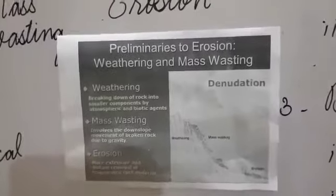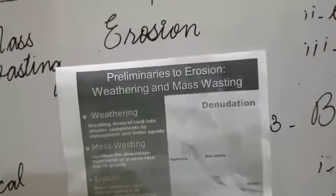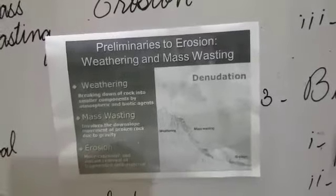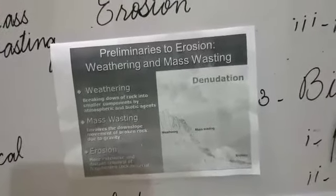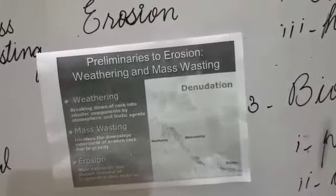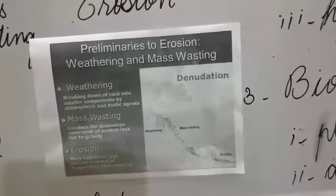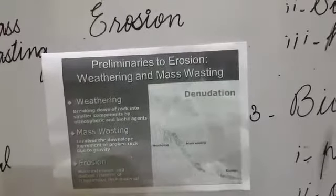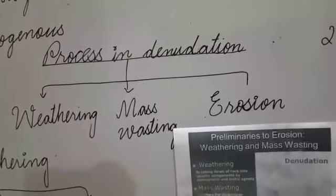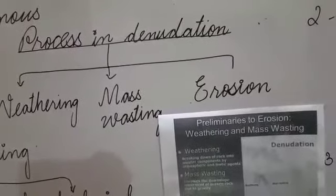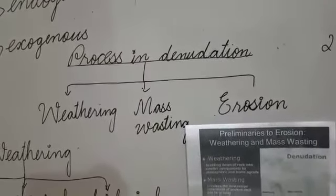What is weathering? Weathering is a process of breaking down rocks into smaller components. The breakdown of rocks into smaller fragments is called weathering. Different elements of weather such as temperature, precipitation, humidity, and air pressure cause this. Weathering is a process of breaking down rocks into smaller fragments through weather elements which include temperature, precipitation, and humidity.